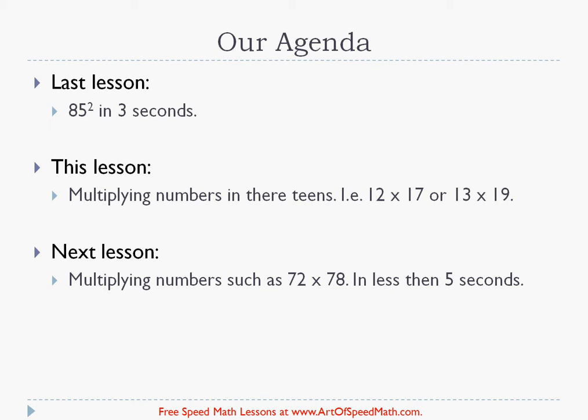This lesson we're going to be looking at how to multiply numbers in their teens such as 12 times 17 or 13 times 19. And next lesson we're going to be looking at numbers in a specific case where the first digit is the same and the last digits add to 10. So it could be 72 times 78 or 81 times 89 and we're going to look at how to do that in typically around three to five seconds in your head.